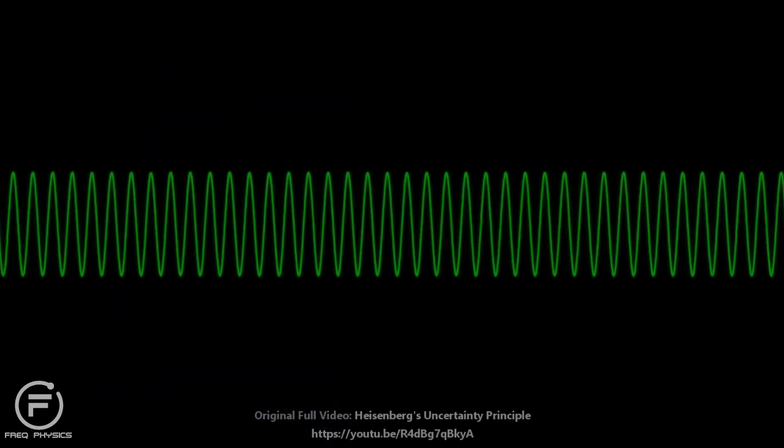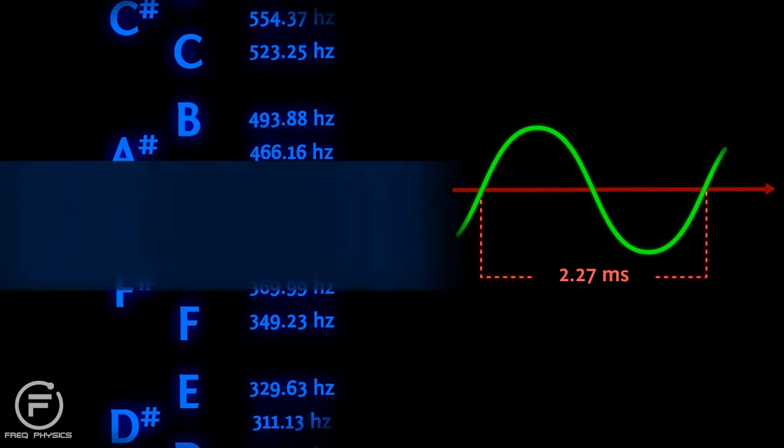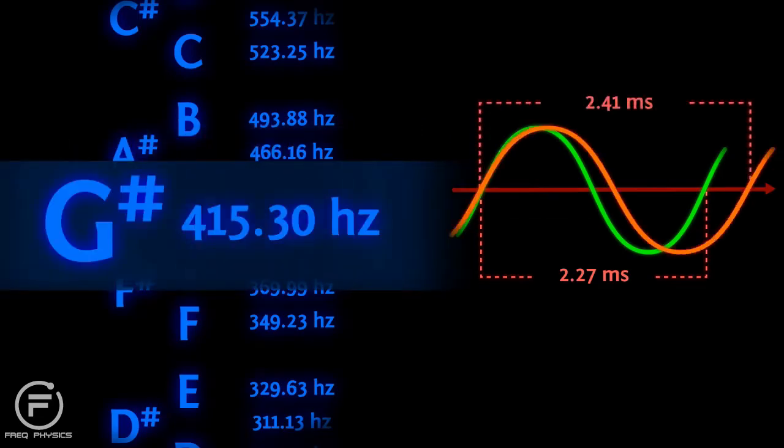Here's another one. This one was a 415 Hz sine wave, also known as G sharp above middle C.